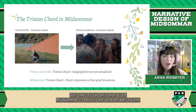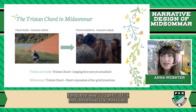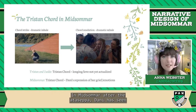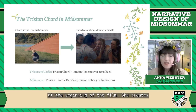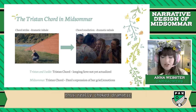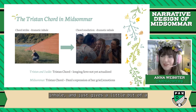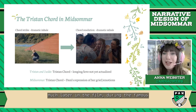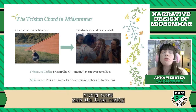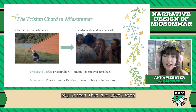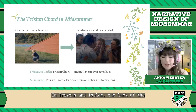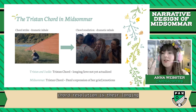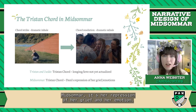The Tristan Chord can be found in many pieces of media in a less tangible, non-musical way. In Midsommar, after the Ättestupa, Dani has seen adults die after already losing her own parents at the beginning of the film. She creates this really choked, dramatic inhale and gives a little cry that does not match the inhale. Then the resolution comes much later in the film during the famous crying scene — the first really big scream she gives with the other women at the Harga. During that time you've got the suppression. In Tristan and Isolde, the lack of chord resolution is their longing and love not realized. But in Midsommar, it's her repression of grief and emotion.